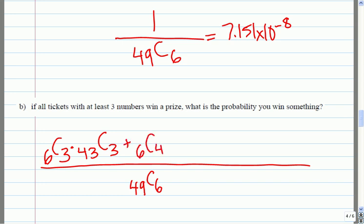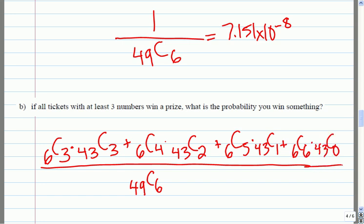If we continue this way, six numbers choose four. This is a ticket that wins with four numbers. That means there's still 43 choose two for the remaining numbers. And if I finish this, six choose five times 43 choose one. And six choose six. And we don't want any of the 43. So, those would be all possible winners. So, let's calculate.